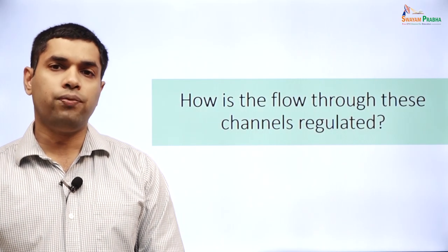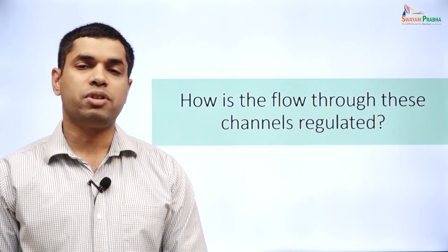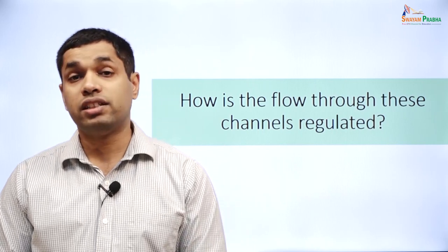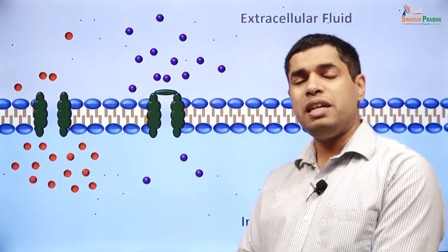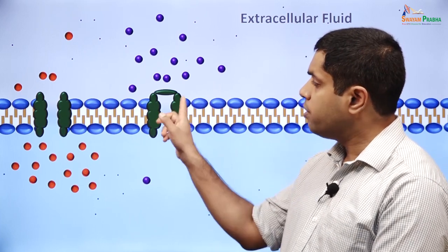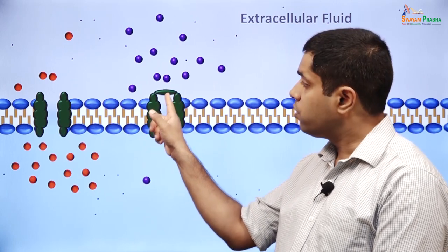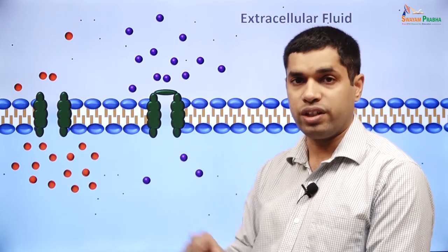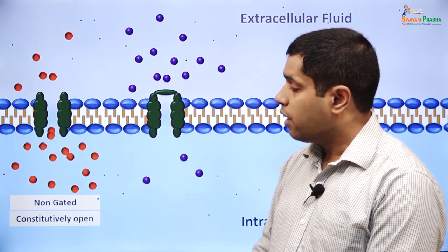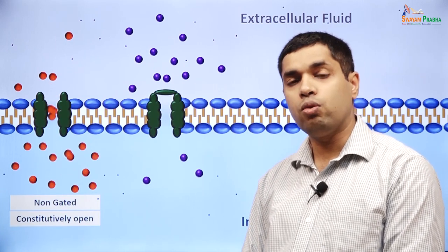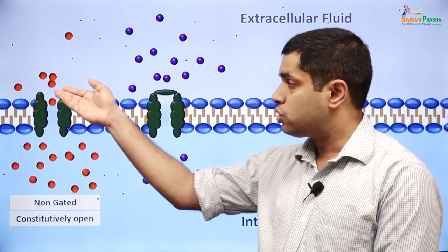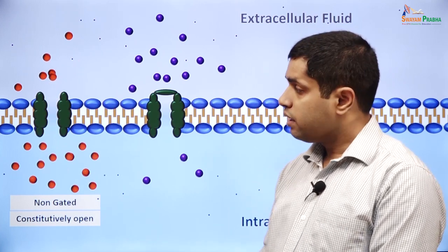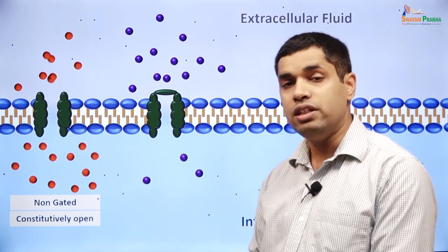We will now look at how the flow of ions through these channels is regulated — this is sometimes called gating. We can broadly divide ion channels into channels that are regulated or gated, and channels that are not regulated or non-gated. A gate refers to a structural component on the channel that regulates flow through it. A non-gated channel does not regulate the flow of ions through it. Non-gated channels are also called constitutively open channels because they are open at all times, and ions will continue to move as long as the electrochemical gradient for that ion is favorable. These kinds of channels contribute to the resting membrane permeability.